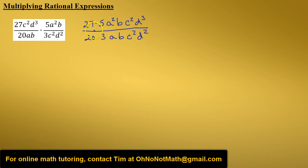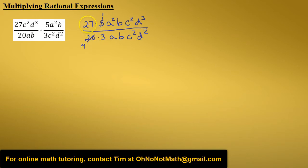Now let's take the numbers and see if we can simplify. 5 goes into 20 four times, and 5 goes into 5 once. Then 3 goes into 27 nine times, and 3 goes into 3 once.